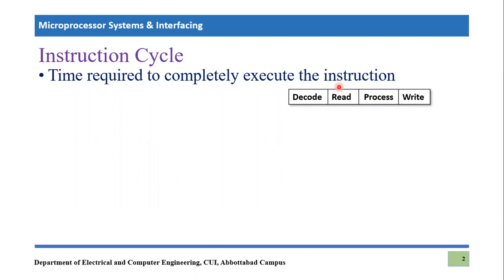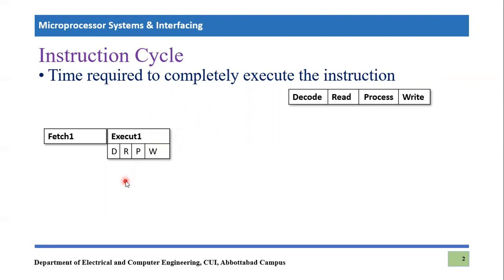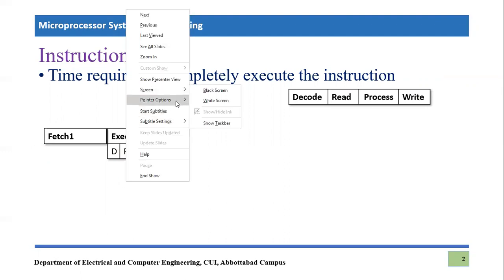Before we go further, let's assume we have three instructions included in one single program that we want to execute. The very first step is to fetch the first instruction — that is fetch one. Then we have to execute it, and this execution of the first instruction is a composition of those four steps: decode, read, process, and write. So one instruction cycle is consumed in fetching and another instruction cycle is consumed in execution of instruction one.